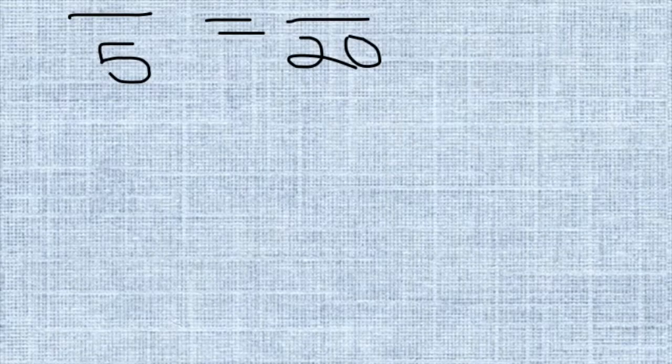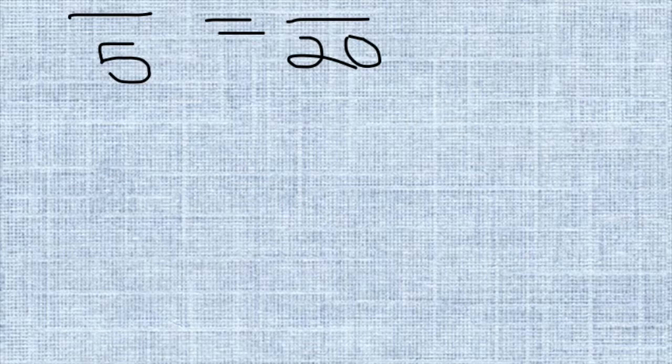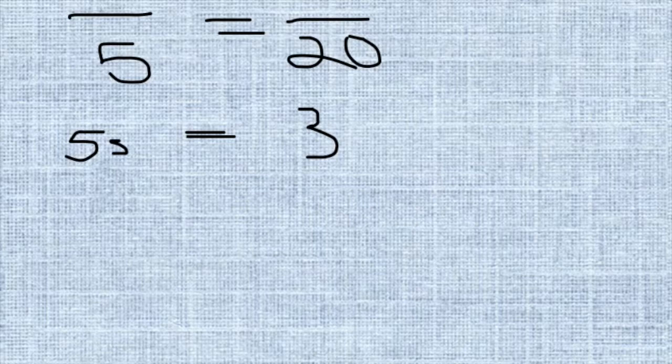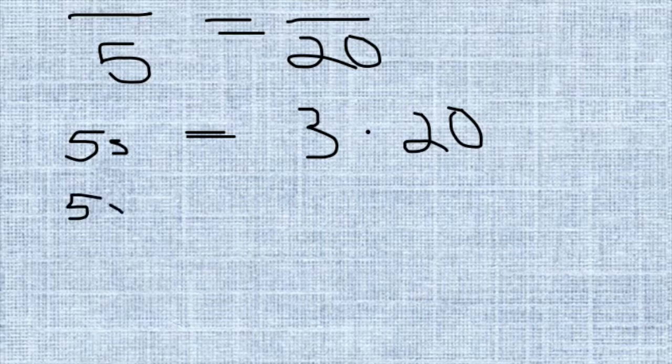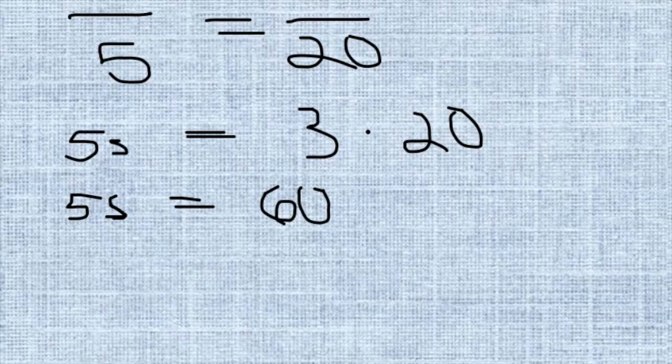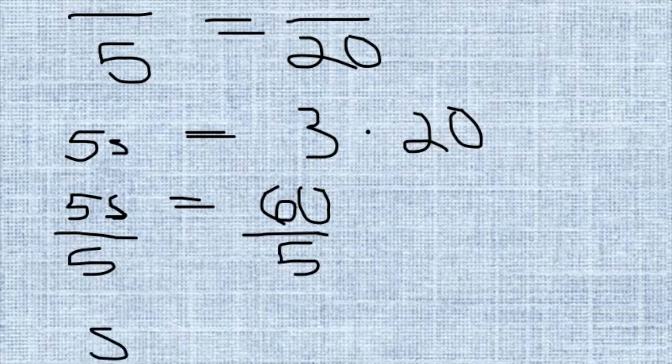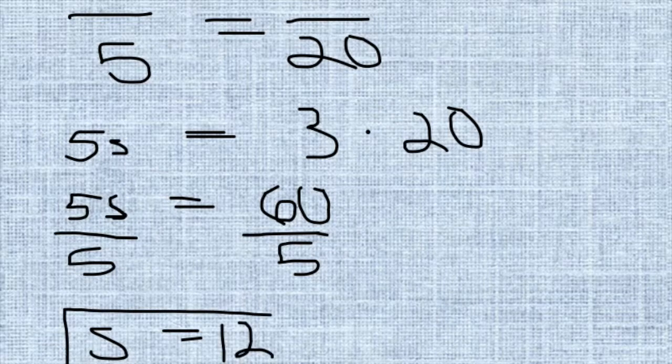Let's do number two now. We can cross multiply and then solve the algebraic equation. I'm going to start with the variables again, the 5 and the s. If you're looking at number two, it's 3 fifths equals s over 20. So I'm going to multiply 5 times s and I get 5s equals 3 times 20. If we do the math, we have 5s equals 60. Now we can divide both sides by 5 to get the variable by itself. So we'll have s equals 12.